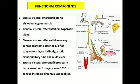The next functional component is special visceral afferent fibers. These special visceral afferent fibers carry the special sensation — that is, the taste sensation — from the posterior one-third of the tongue and also from the circumvallate papillae.